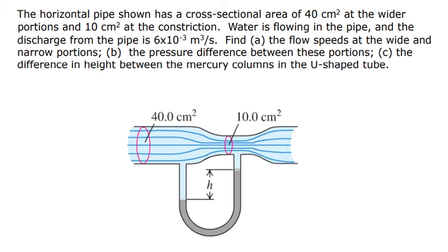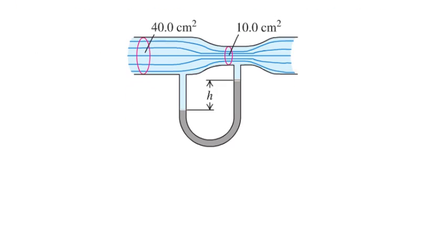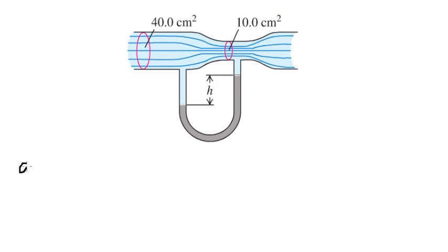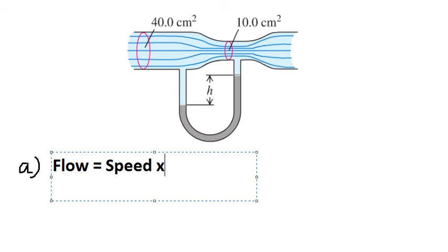So now I will show you how to answer. So for question A, we have the formula. That's about the flow equals to the speed multiplied with the area.